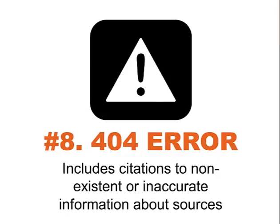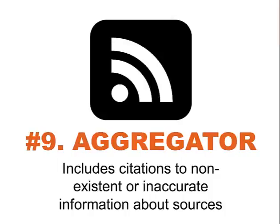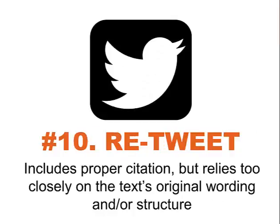Number eight is the 404 error — this is when you include citations to non-existent or inaccurate information about your sources. Number nine is the aggregator, which also includes citations to non-existent or inaccurate information about sources. And lastly, number ten is the retweet — this includes proper citation but relies too closely on the text's original wording and or structure.